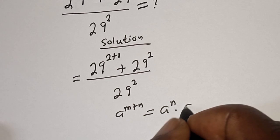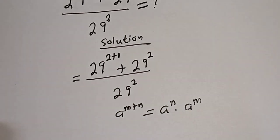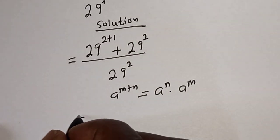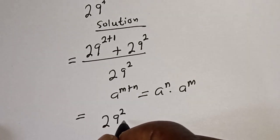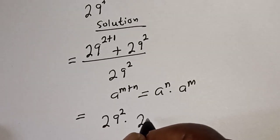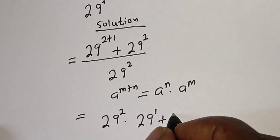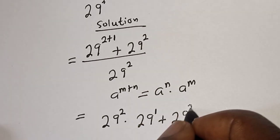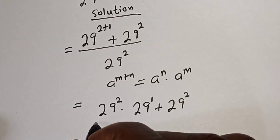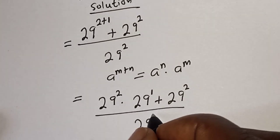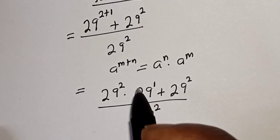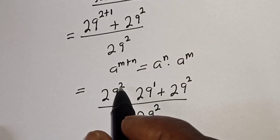So this is equal to 29 raised to power 2 multiplied by 29 raised to power 1, plus 29 raised to power 2, over 29 raised to power 2.